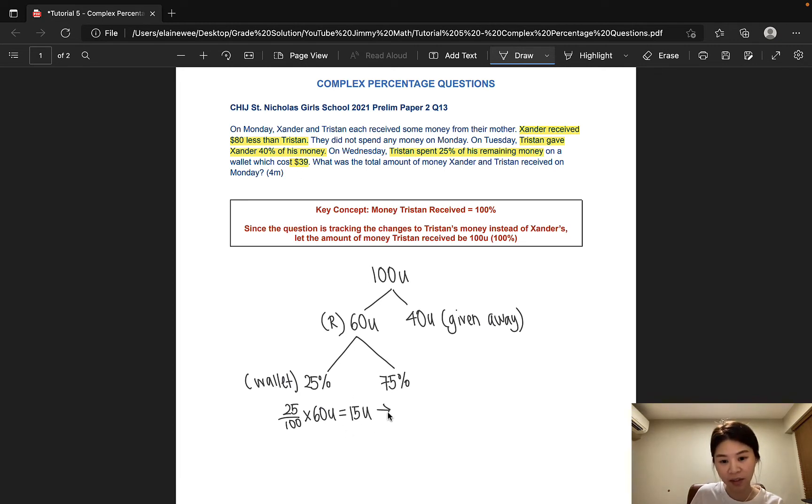That would mean that 15 units is $39. So there we have it. We can go ahead and solve what one unit is. So 39 divided by 15 gives us $2.60.